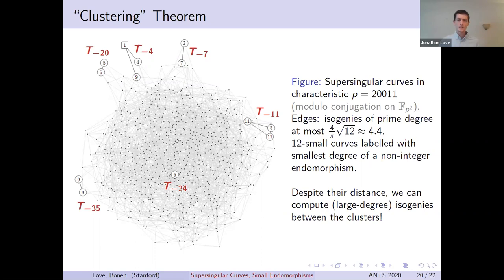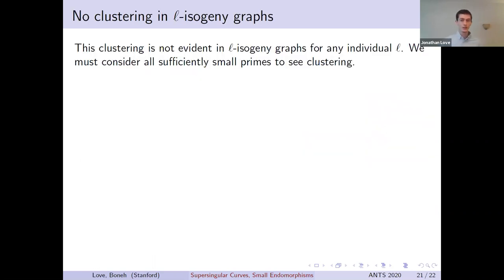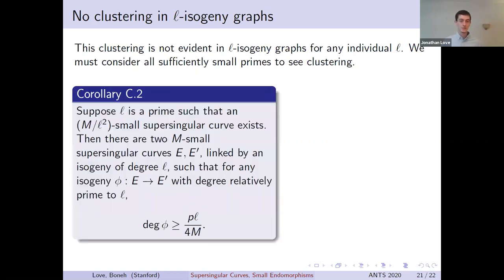There's another feature of this set which is invisible at the level of L-isogeny graphs. You may notice that we had to include both degree 2 and 3 isogenies to form this graph. This is actually essential for the clustering phenomenon to occur. In fact, we have the following result. If L is a sufficiently small prime, then you can always find two supersingular curves E and E′ in the same set T_d, for which the only short paths between them have degree divisible by L. That is, if you take any isogeny with degree relatively prime to L, it will have degree at least P times L over 4m, which again, recall, is absolutely massive. This demonstrates that there can be curves that are very close in the L-isogeny graphs that are not close in any other prime degree isogeny graph.